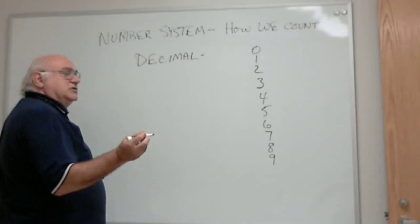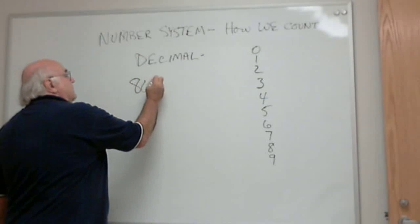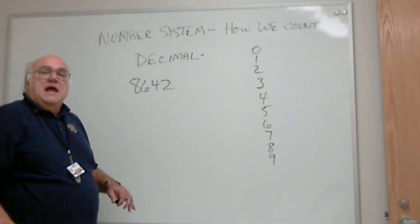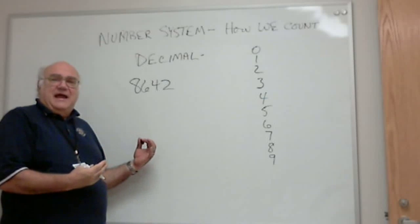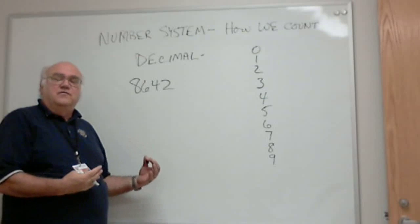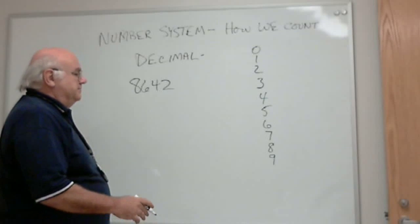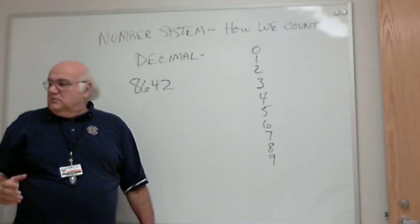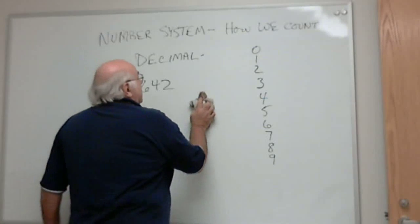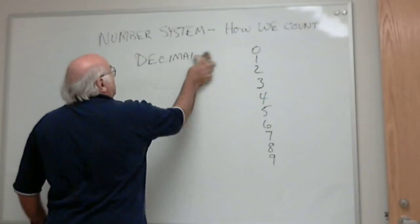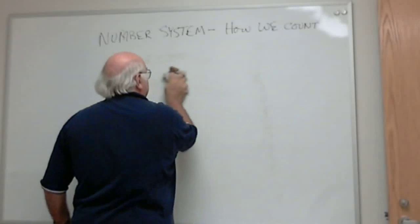What does that mean by going to the next position? Let's take a number like 8,642. How do we know to say 8,642? That's where the numbering system comes in.